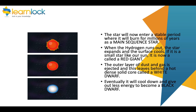The outer layer of dust and gas is then ejected, leaving behind a hot, dense solid core called a white dwarf. Eventually it will cool down and give out less and less energy until it is no longer giving out any energy, and it becomes a black dwarf.